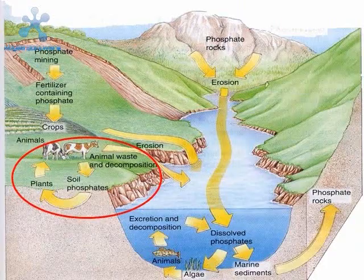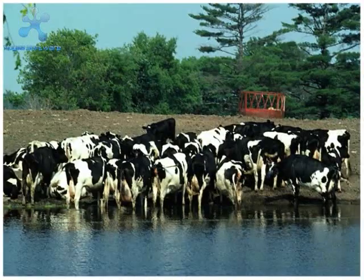Afterwards, plants take up the phosphate ions from the soil. If consumed by animals, the phosphates move to the animals. Phosphates absorbed into animal tissue eventually return to the soil in the form of excrement or animal tissue decay and death.